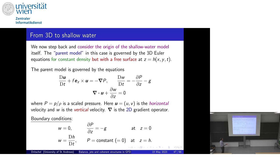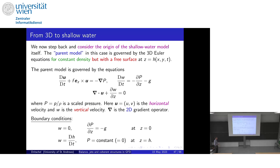We actually had to write a numerical model for this 3D flow with a free surface, so we need to know the boundary conditions. At the bottom, w equals zero — no vertical motion — and with no vertical motion there can't be vertical acceleration either, giving hydrostatic balance at z=0: a Neumann boundary condition on pressure. At the top, the vertical acceleration is given by the rate of change of the free surface height — particles on the free surface move with the fluid as a material surface. The atmospheric pressure at the top is taken to be zero for simplicity.